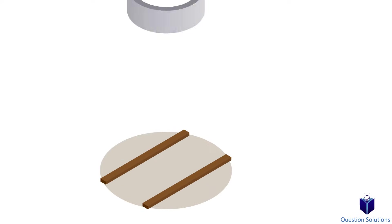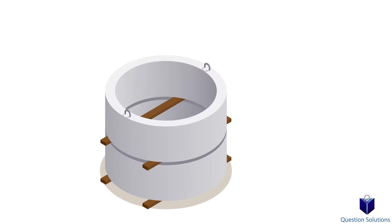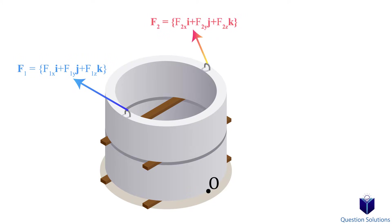If we have an object in 3D space, the process is similar. We now express our forces in Cartesian form and add them up. To find the moments, we use our cross product equation, and once we figure out the moments created by all the forces, we can add it up.